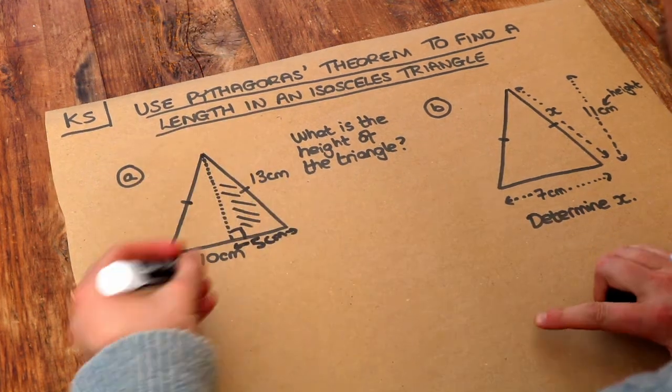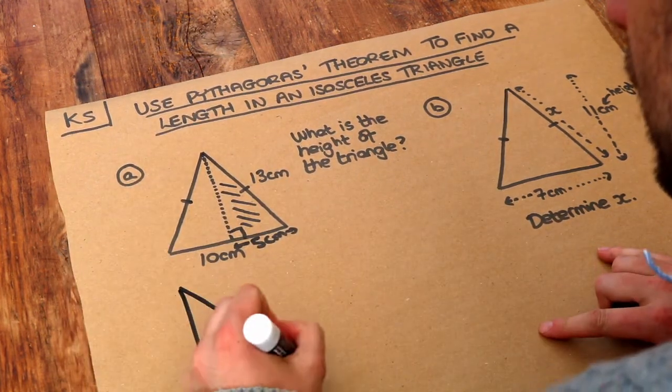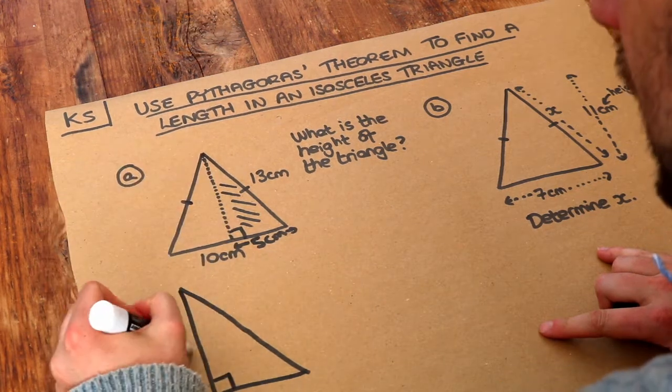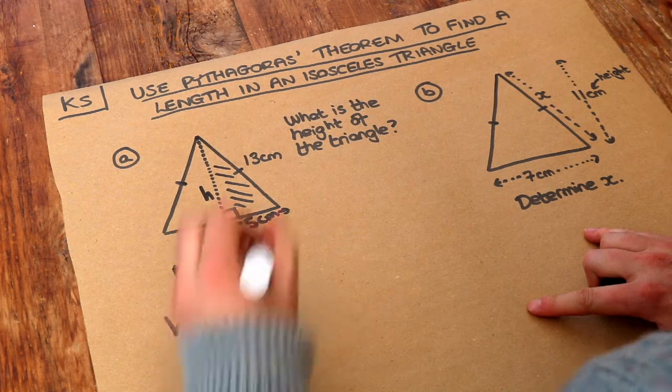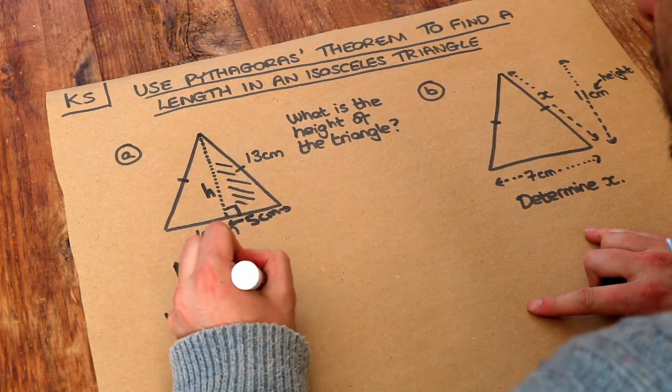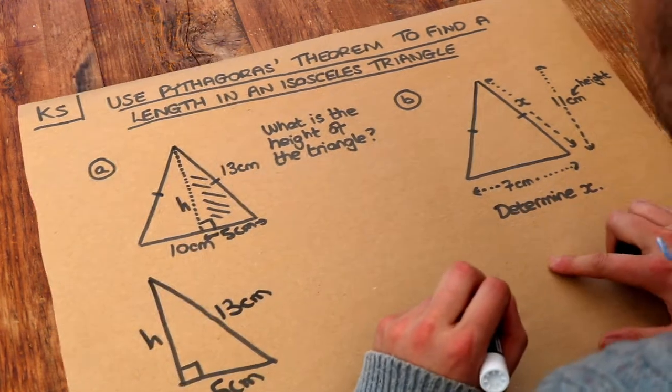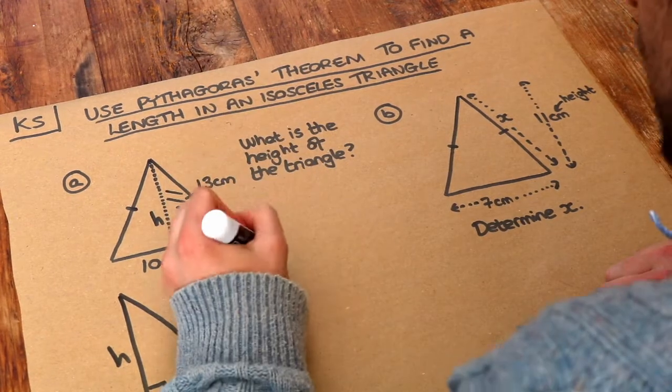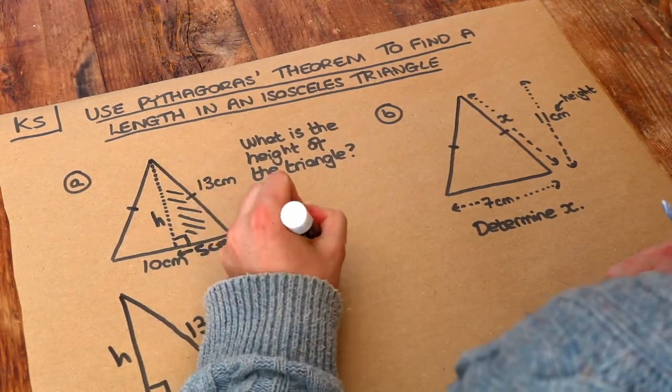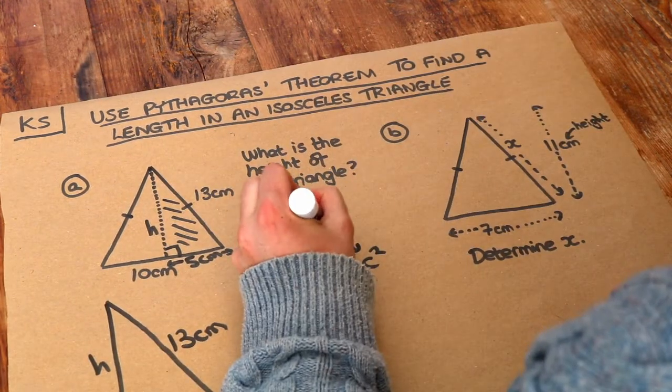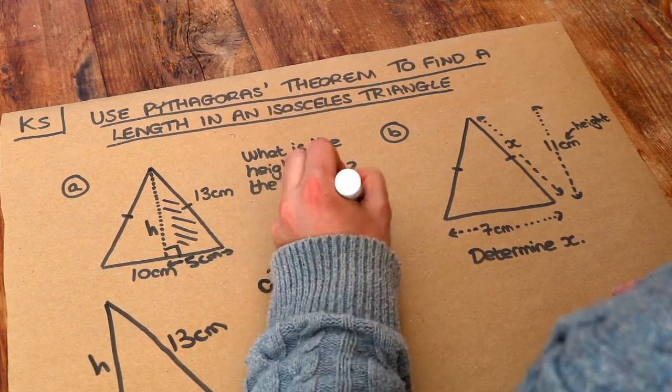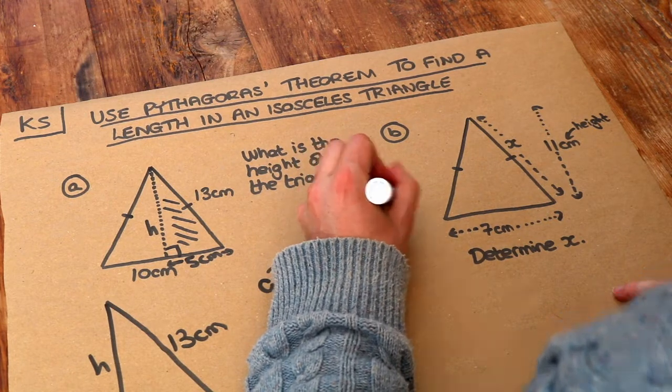So let's draw that triangle separately. We've got the height here, let's call it h. We've got that 5 centimeters at the bottom and this 13 centimeters here. So let's use Pythagoras theorem. We saw in a previous video that Pythagoras theorem is a² + b² = c², where c is the hypotenuse, the longest length of the triangle. It doesn't matter which way a and b go around.